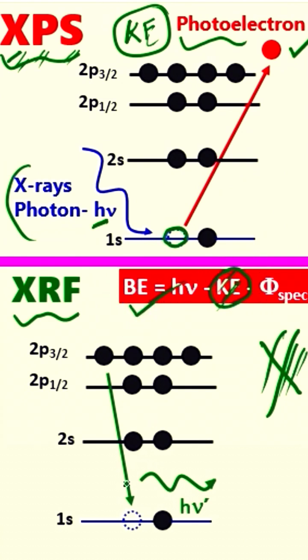Now there is a vacancy here, so there is a probability that higher-energy electrons from these orbitals will fill this vacancy.